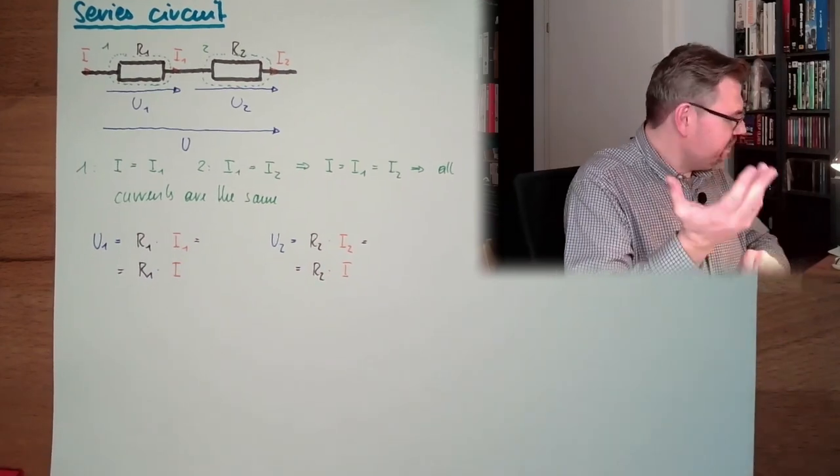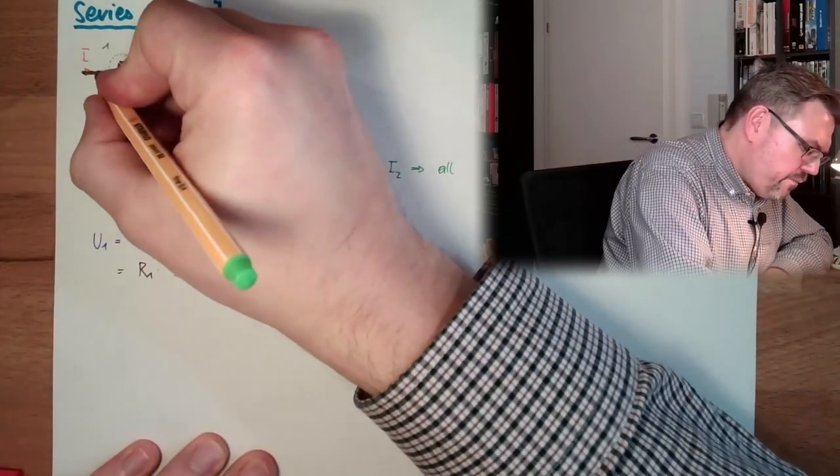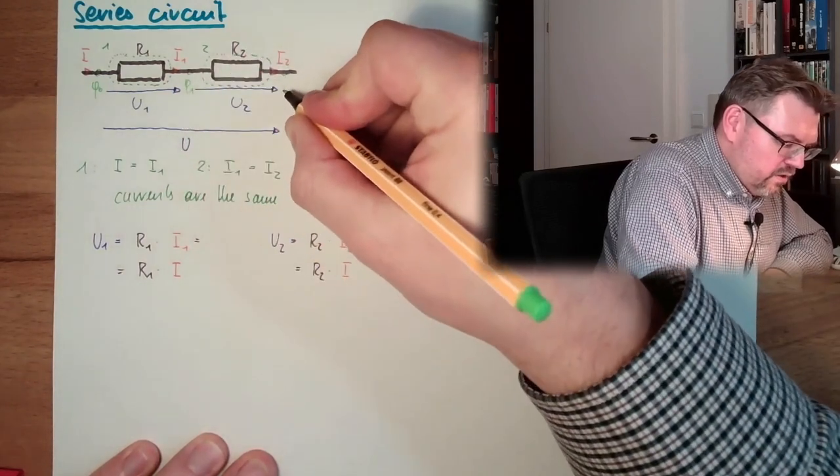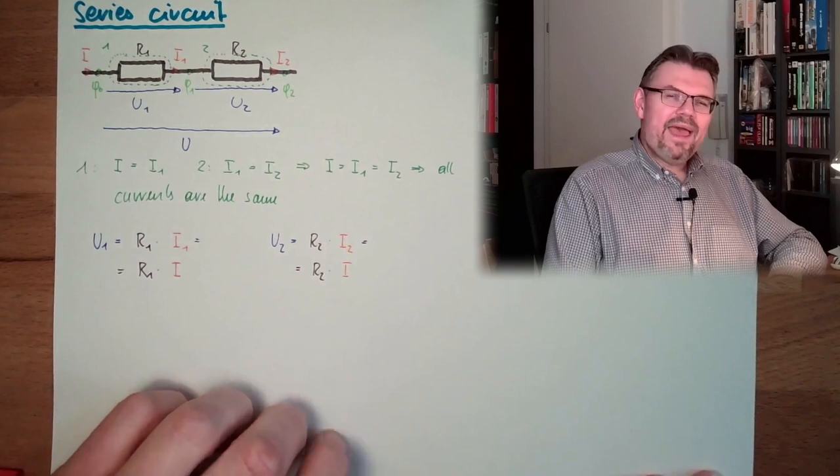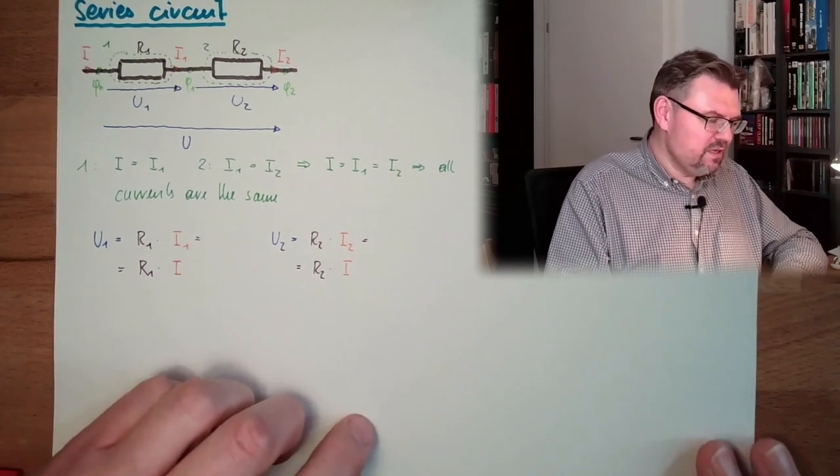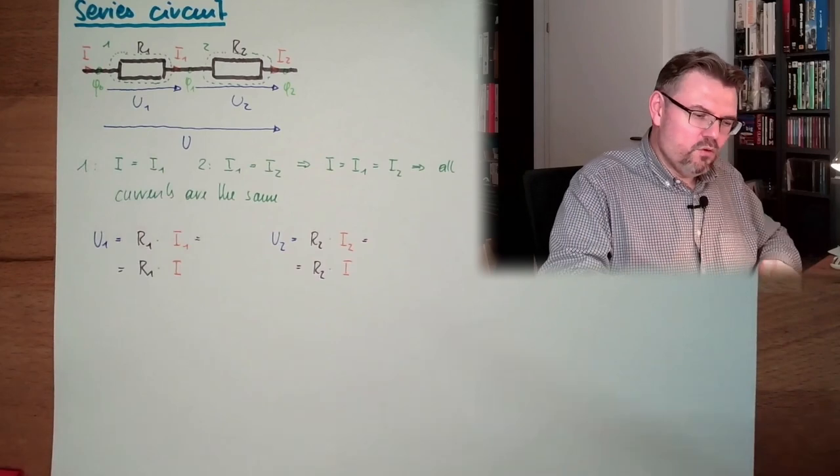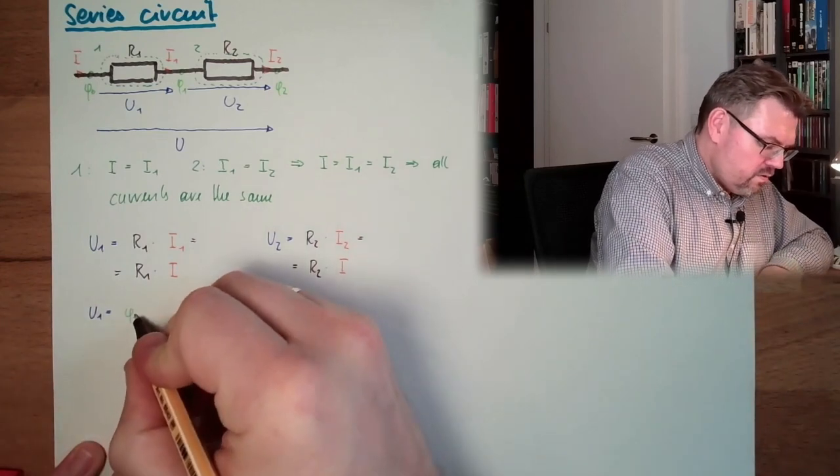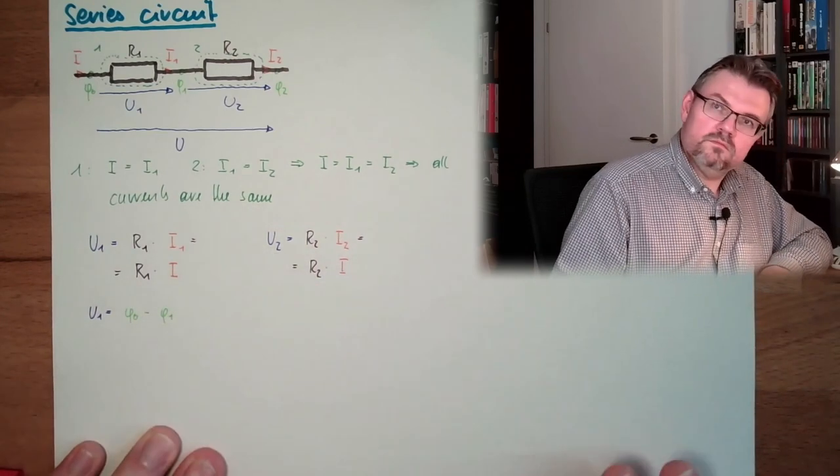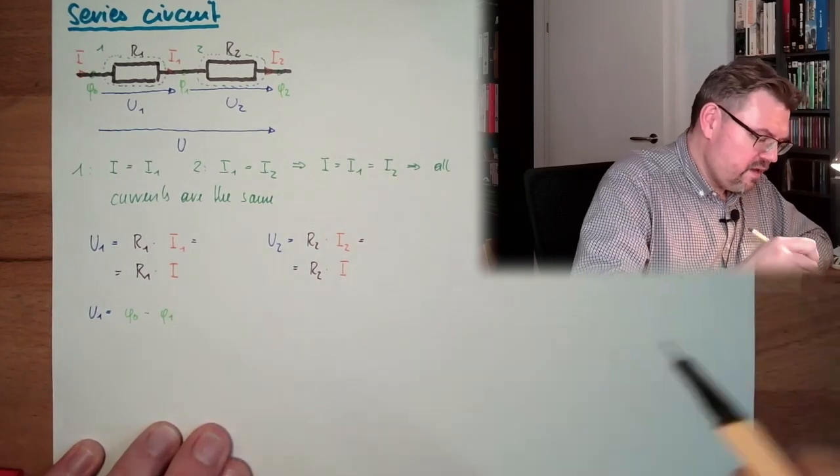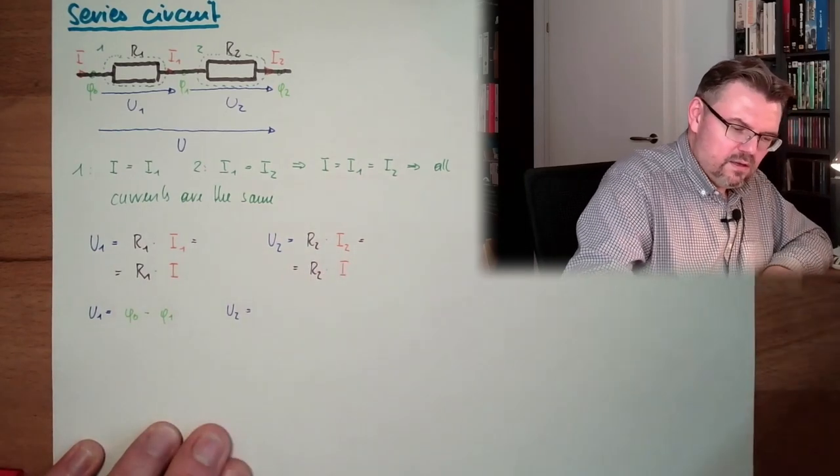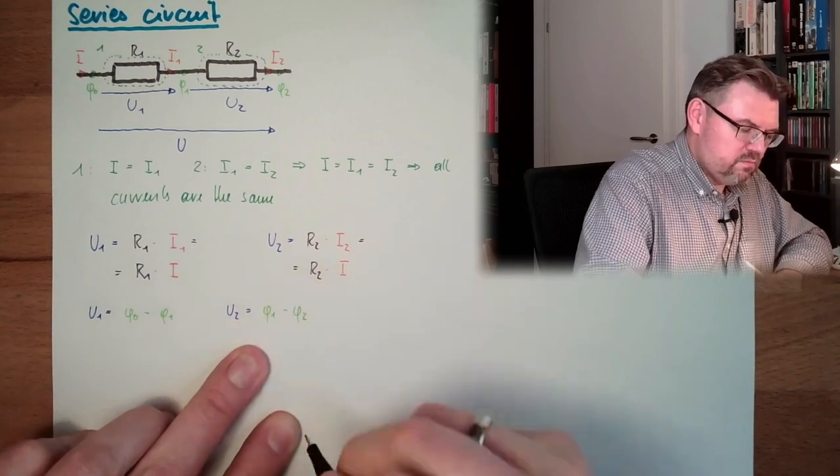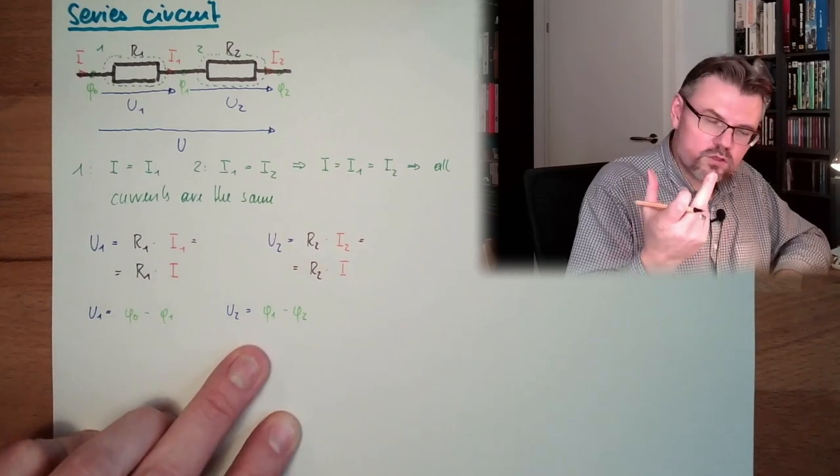Now let's think about the potentials. Here we have potential V0, here we have potential V1, and here we have potential V2. The voltages between potentials, the voltage is potential difference. So we say U1 equals V0 minus V1, and U2 equals V1 minus V2. Potential difference is voltage.